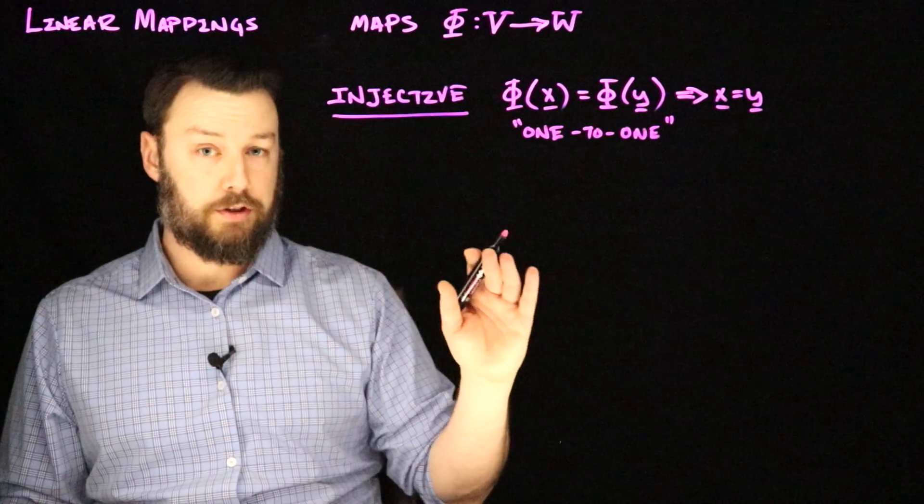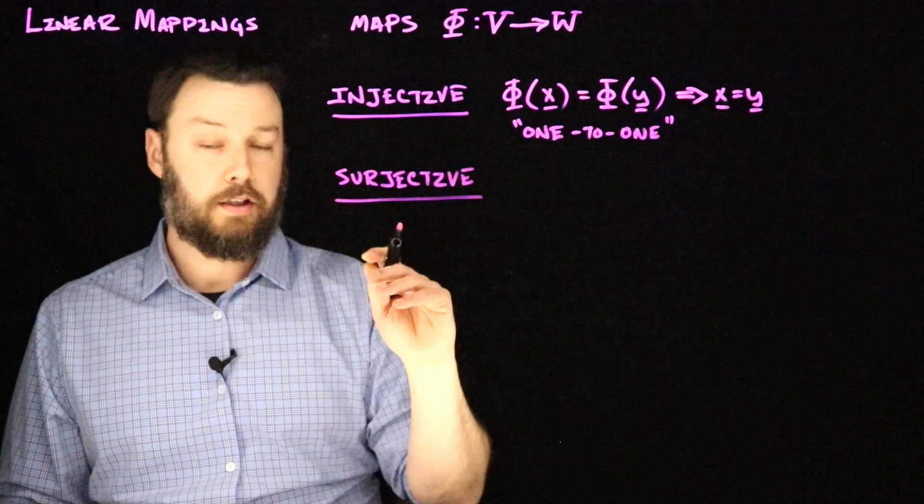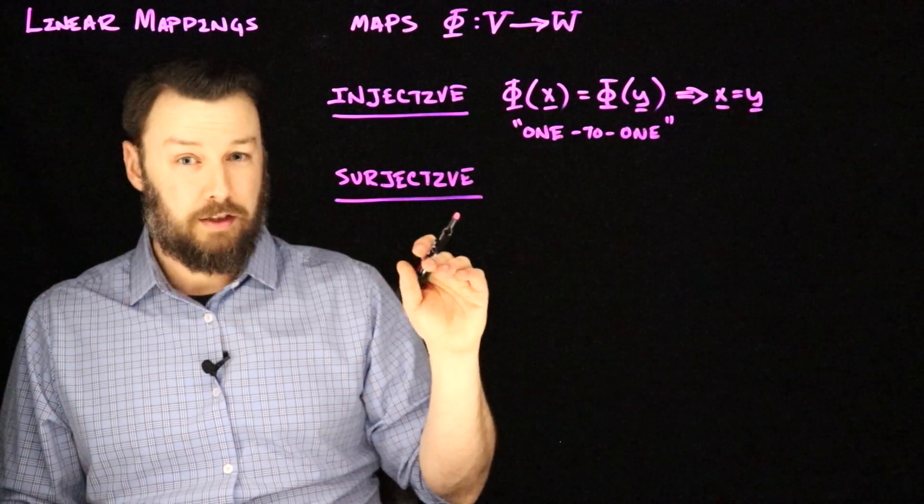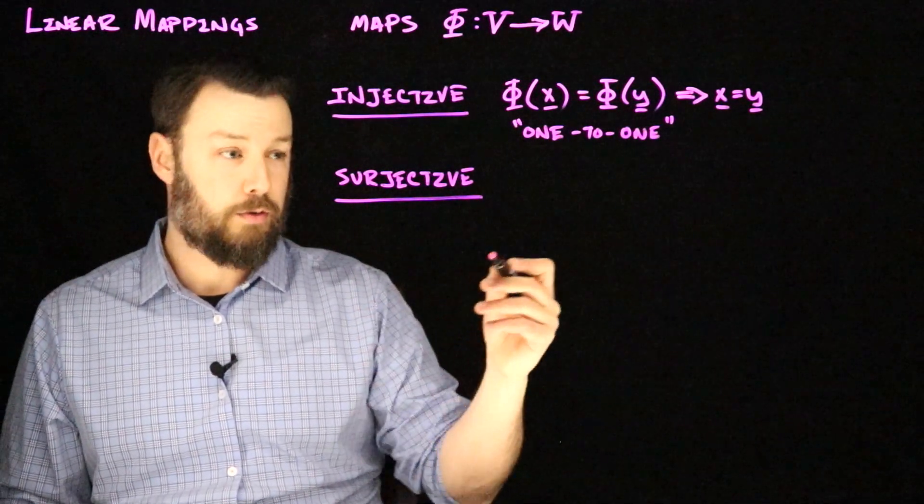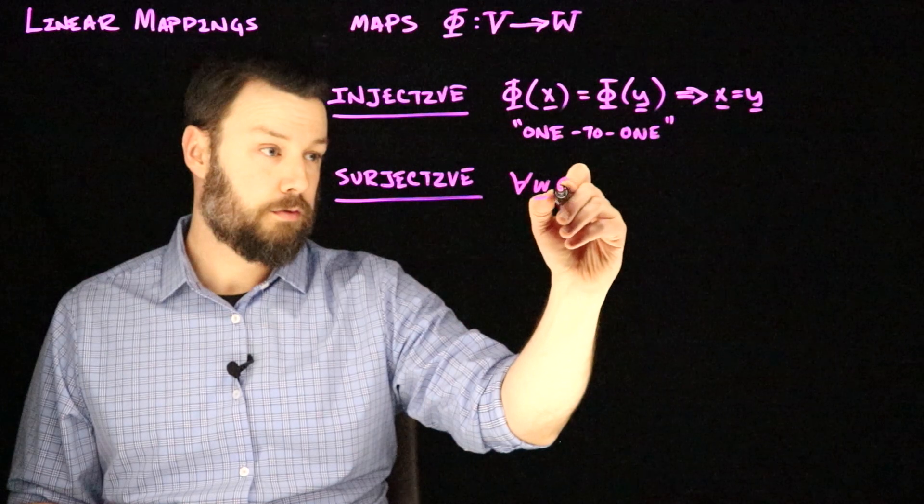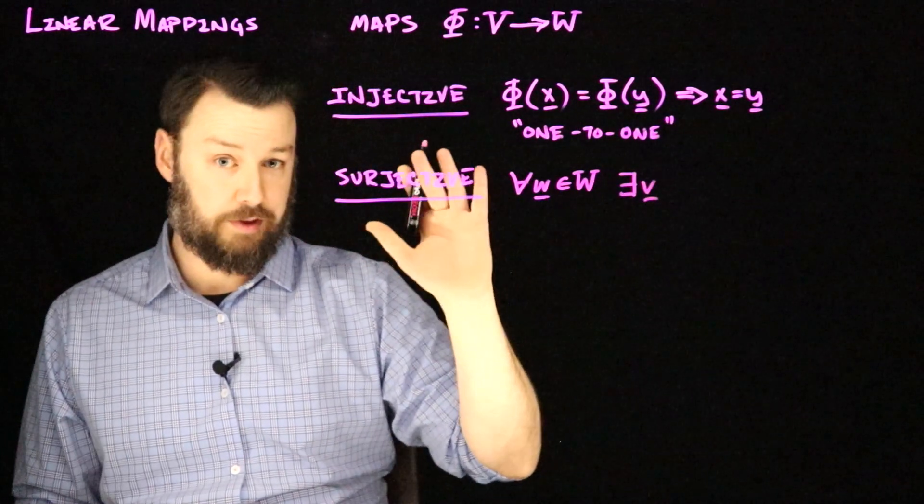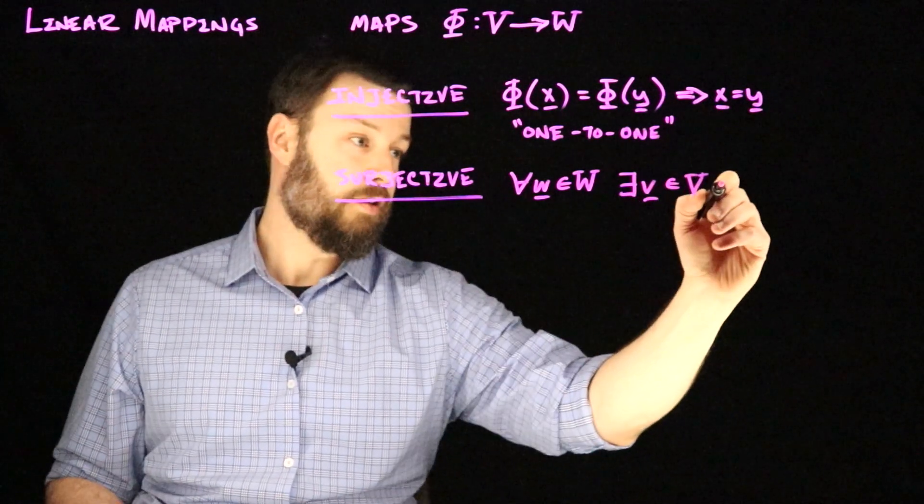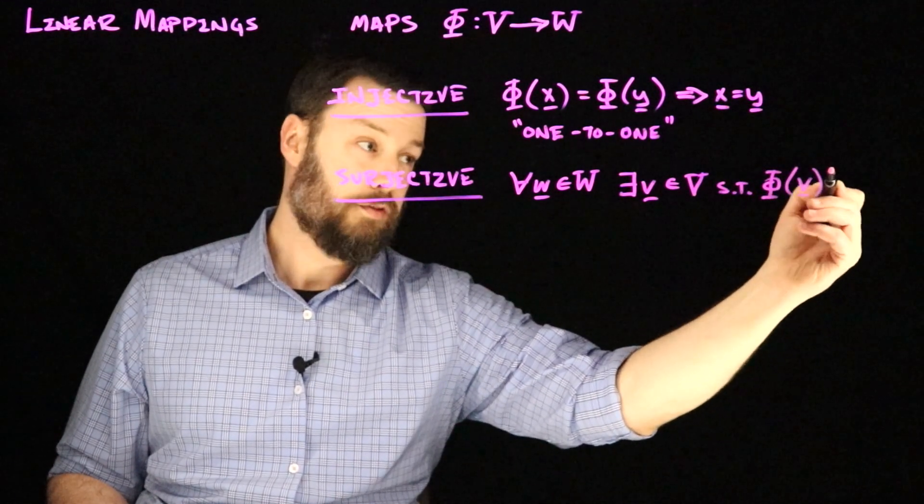There's another concept that we might have for a map, which is surjectivity. So we would say that the map is surjective if I can pick any point in W that I want and there is always some point in V that would have gotten me there. It doesn't have to be unique, but as long as there's some point in V that would get me there. So that means that for all W in the set W, there exists some V in V such that if I applied Phi to V, then I would get W.